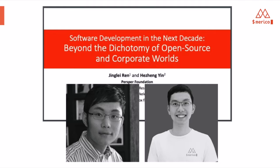He-Jung is the CTO at Merico. His research while working towards a PhD at UC Berkeley on quantifying the value of code contributions forms the foundation of Merico's technology. Jinglei Ren is the CEO at Merico. He was a researcher at Microsoft Research, and he earned his PhD from Tsinghua University. His earlier talks, and especially a talk entitled Beyond the Dichotomy of Open Source and Corporate Worlds, were foundational in this work, and what I'm talking about here is an extension of that.